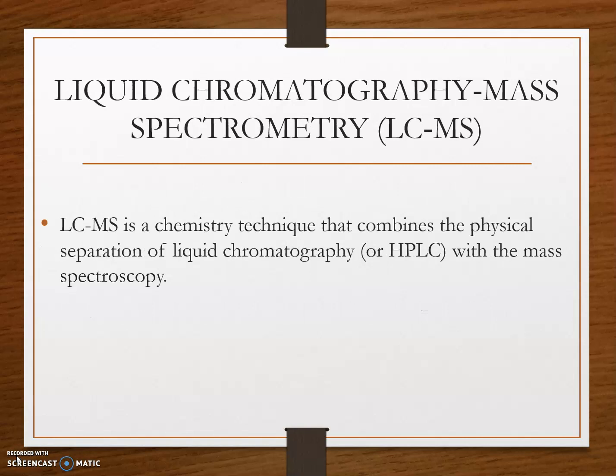LC-MS stands for liquid chromatography–mass spectrometry. The commonly used LC is HPLC. LC-MS is a technique that combines the physical separation of liquid chromatography with mass spectroscopy. With this technique we can analyze natural compounds including various classes of phytochemicals such as coumarins, phenolic acids, terpenes, and steroids.